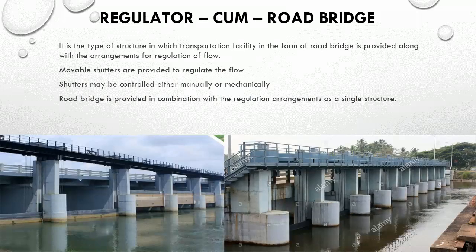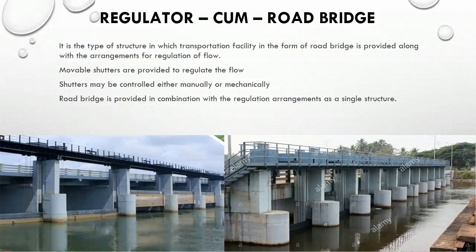Finally, the regulator cum road bridge is a type of structure in which transportation facility in the form of a road bridge is provided along with the arrangements for regulation of flow. Moveable shutters are provided to regulate the flow, and they may be controlled either manually or mechanically. The road bridge is provided in combination with the regulation arrangements as a single structure.